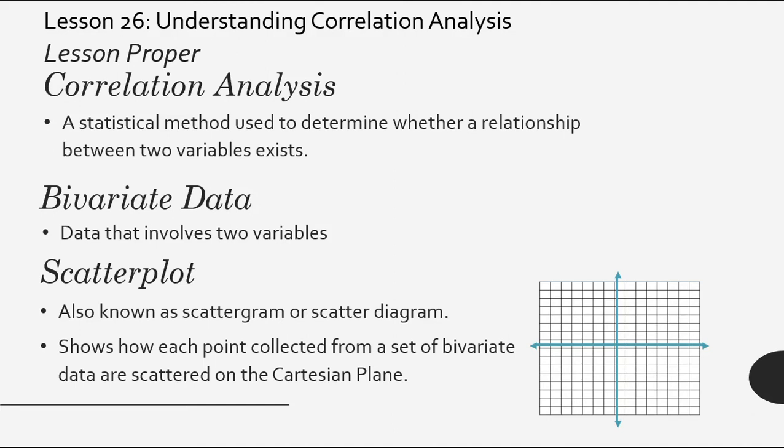Correlation analysis. It is a statistical method used to determine whether a relationship between two variables exists. Here, we are dealing with two variables and the relationship existing between those variables. Data that involves two variables are called bivariate data.